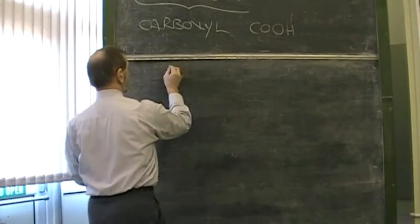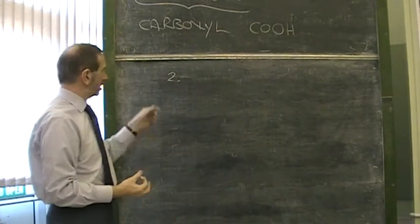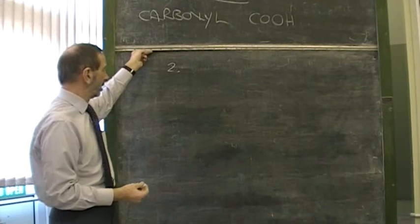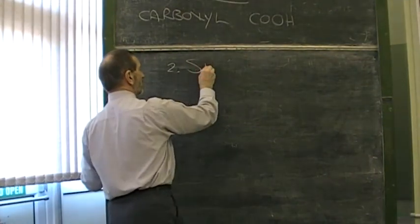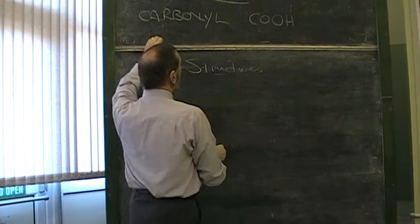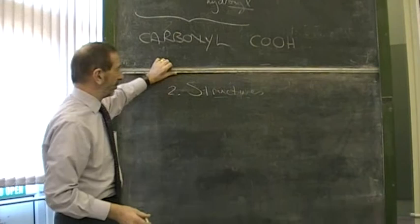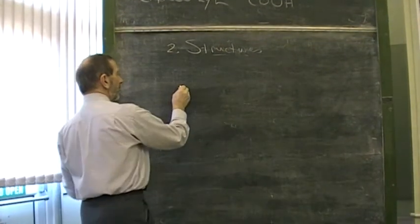The next thing we have to ask ourselves is, how do we name these substances, draw them, recognise them. Let's look at their structures and so on. Well, this functional group can only exist at the end of a carbon chain. For example, how about this one?